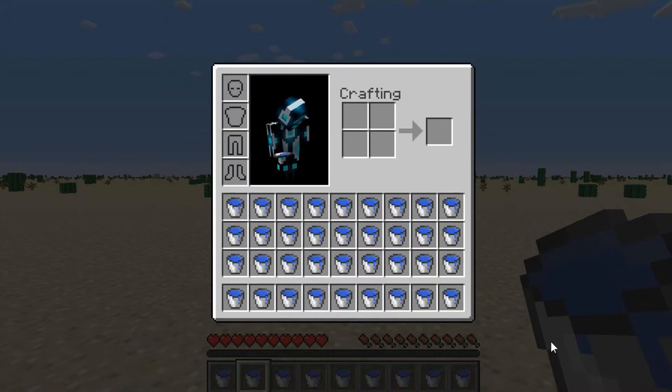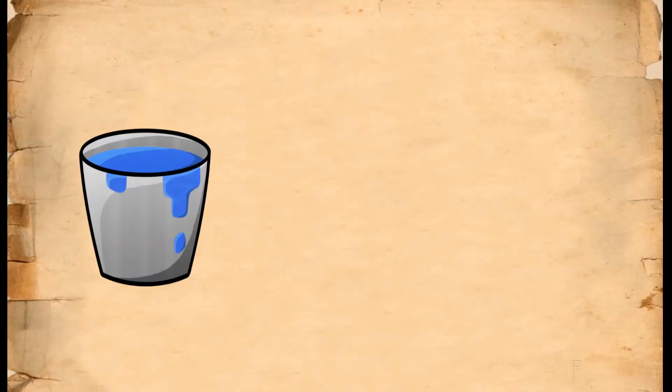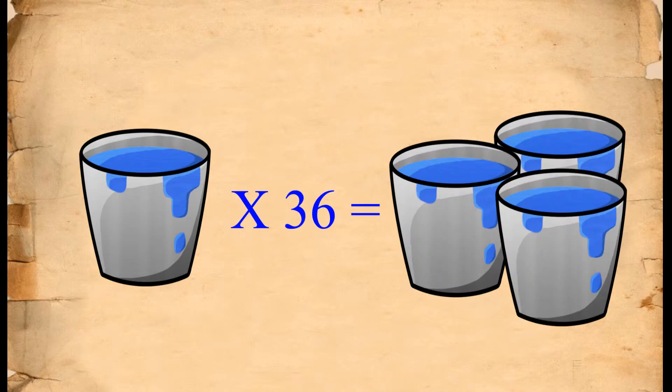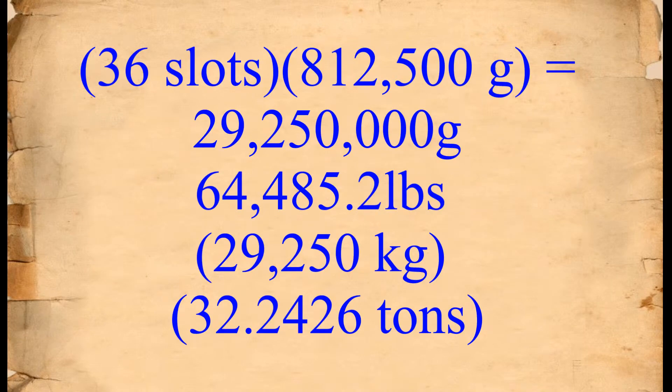There are 36 slots that buckets can be stored in in Steve's inventory. So if we multiply the weight of one water bucket by 36 we get 29,250,000 grams or about 64,485 pounds.